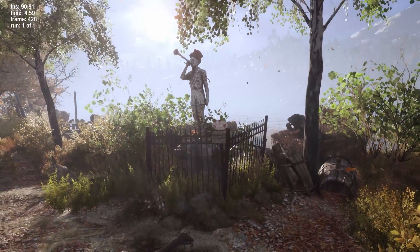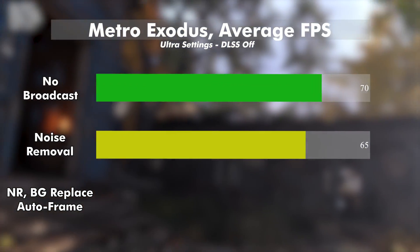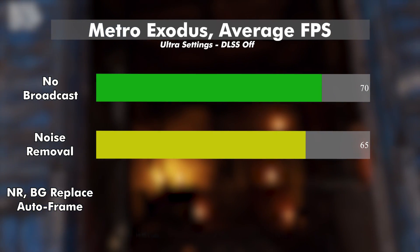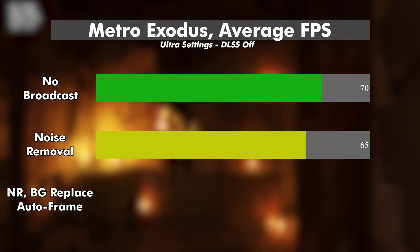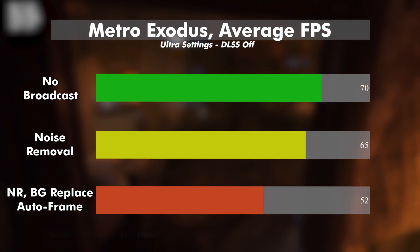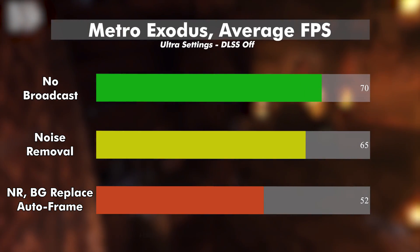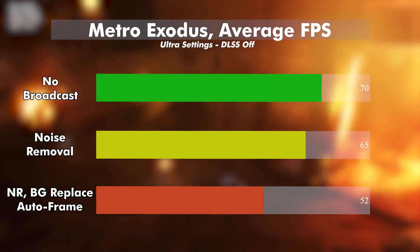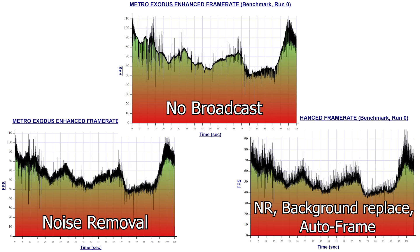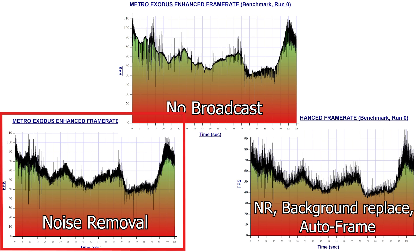Let's look at the Metro Exodus results. Run one, stock with broadcast closed: average 70 FPS. Run two, broadcast noise removal on: a slight dip of about 6% with an average of 65 FPS. Run three, broadcast noise removal plus framing and background replacement: a much bigger hit with a drop of about 25%, averaging 52 FPS. Just using noise removal wasn't a huge hit, but 25% is quite significant. Looking at the frame graphs, the test with it off is much less erratic, with increasing variability as more features are enabled.